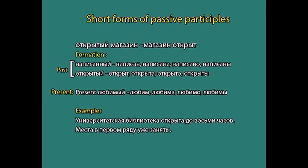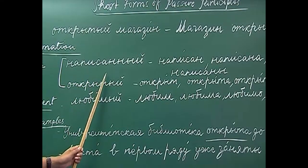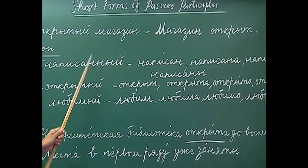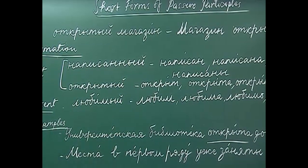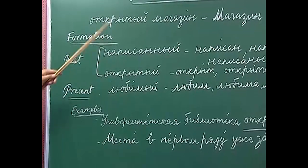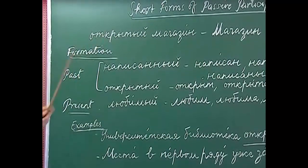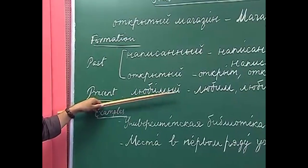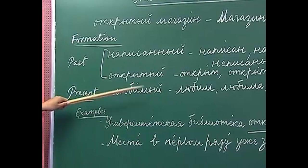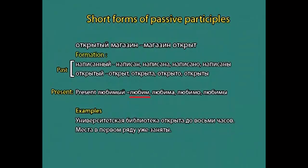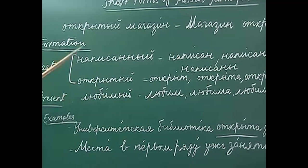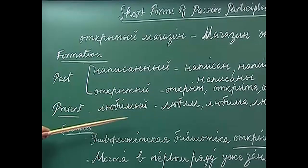To summarize: if the ending is -t + -iy and -y (kratke), remove -iy and -y to get the masculine form. If it ends with -nn + -iy and -y, drop one -n and the ending. Short forms are also derived from present participle passive — for example, 'lyubimyy' gives 'lyubim', 'lyubima', 'lyubimo', 'lyubimy' — though short forms from present participle passive are very rarely used.